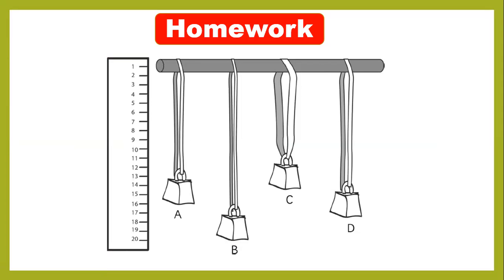So there are four ropes and four weights. You have to decide which rope stretches more. Rope B stretches the most and rope C stretches the least. Today we learned about elastic materials — materials that can be stretched — and rubber band is a great example. This is the today's homework. Thank you so much, take care, and have a nice day.